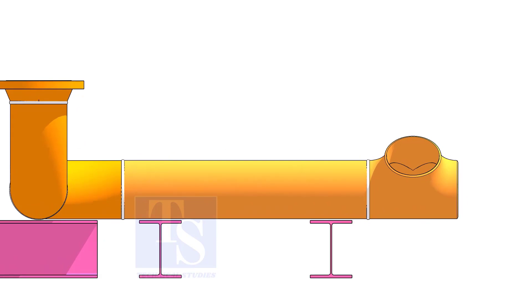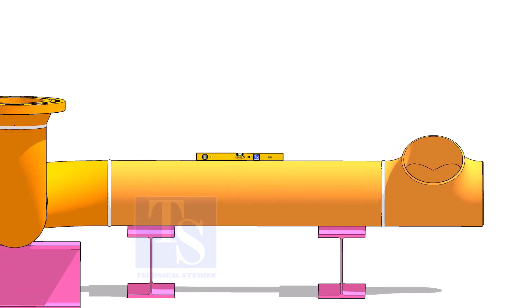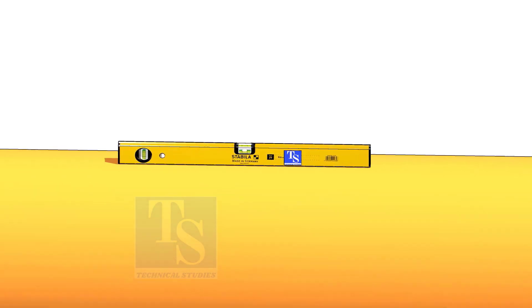Whenever you fit up a pipe fitting on an existing line, the first thing to do is check the level and the dimensions of the pipe.